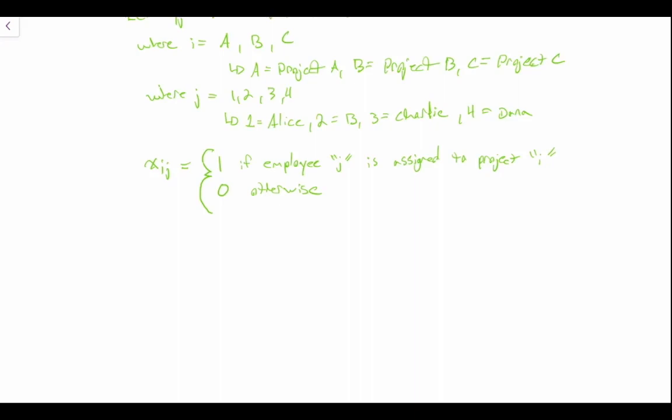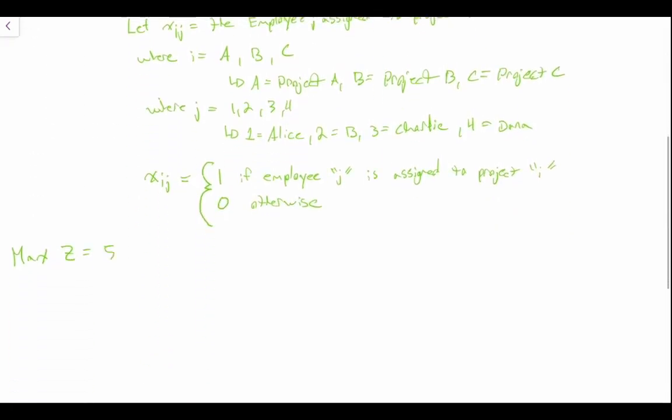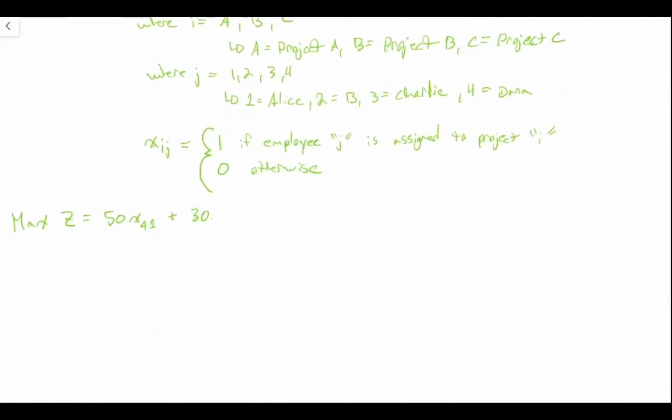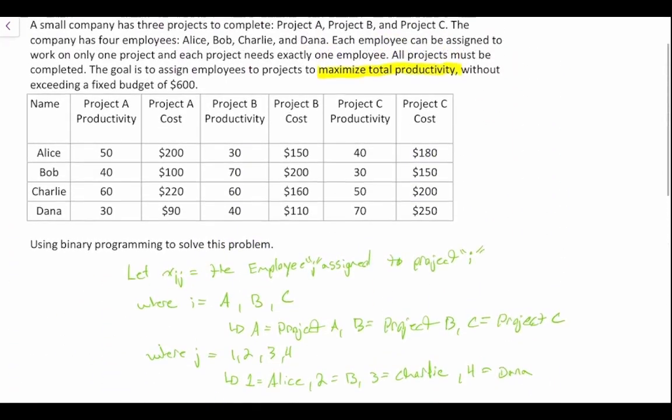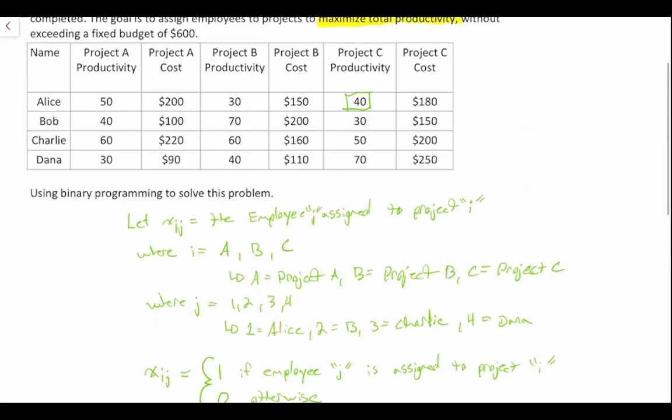Now that we've defined our decision variables, let's write our objective function. We know that we're looking to maximize productivity, so we're going to say max Z, and then we're simply going to take these productivity scores here. So 50 XA1 plus 30 XB1 plus 40 XC1. These are the productivity values that are associated with Alice for each of the projects. This is XA1, XB1, and XC1.